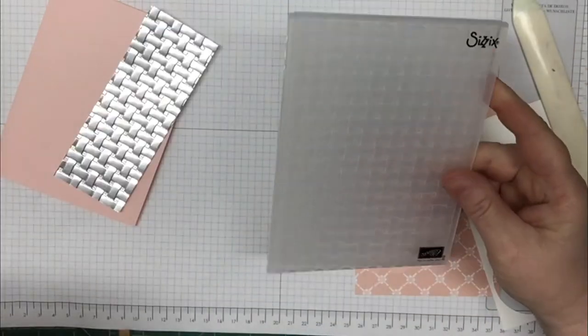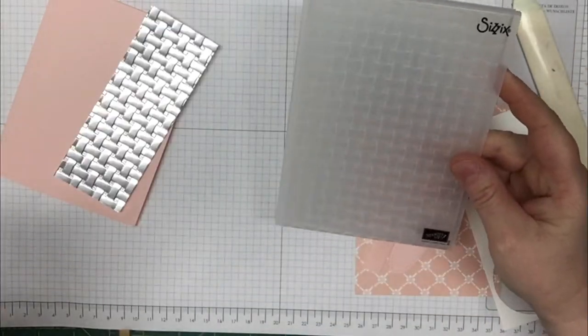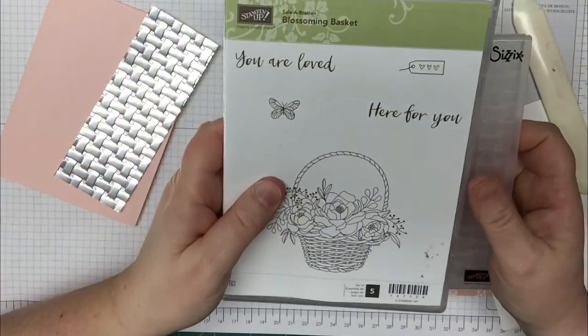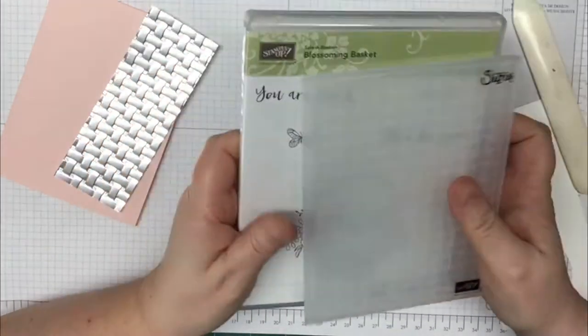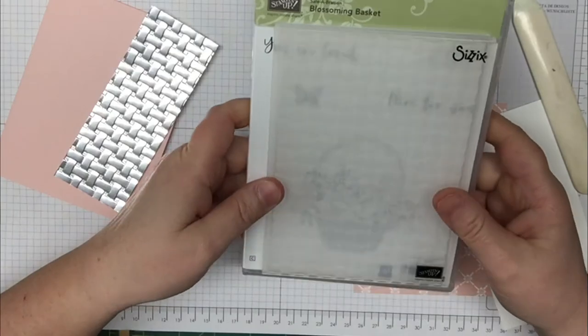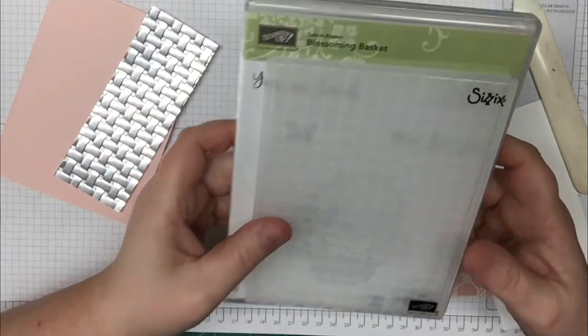During Celebration, this basket weave folder is free along with the Blossoming Basket stamp set. These two are bundled together. When you spend $100, you'll get this set for free.